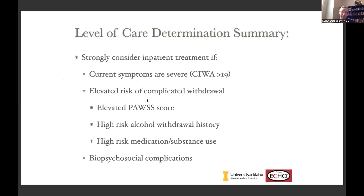In summary for level of care: how severe is their current withdrawal — look at the CIWA for that; what's the risk of having a complicated withdrawal — look at your PAWSS score, their withdrawal history, and other comorbidities; and then what's their biopsychosocial situation?